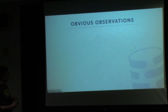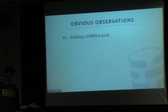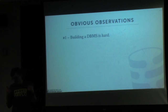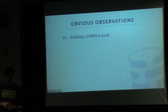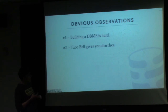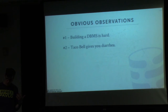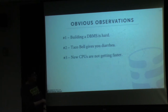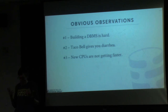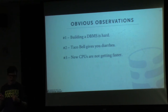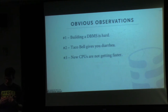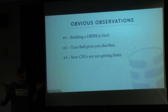Before we begin, I want to make some obvious observations. First, building a database system is hard—hard to build fast and hard to build correct. Second, the new CPUs from Intel and other companies are simply not getting faster. It's sort of the demise of Moore's Law; we're hitting a limit of how fast you can make silicon without it melting, so we won't get magically higher clock speeds.